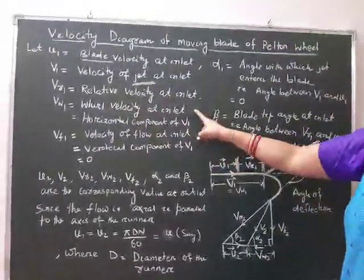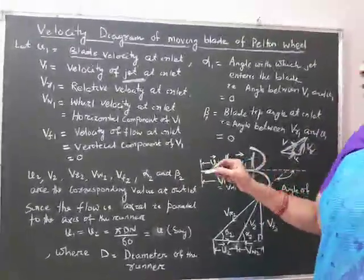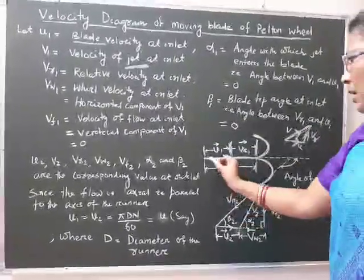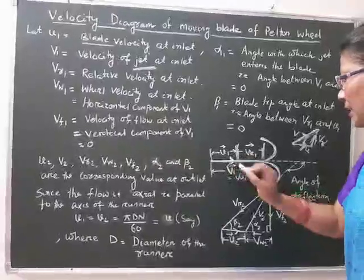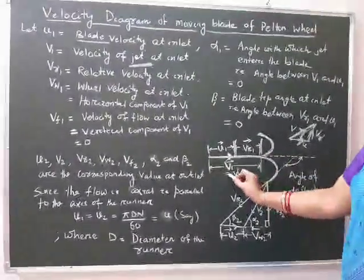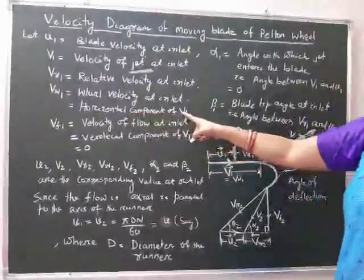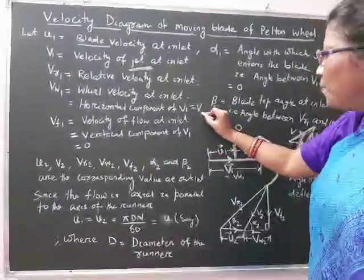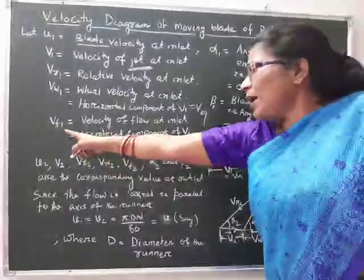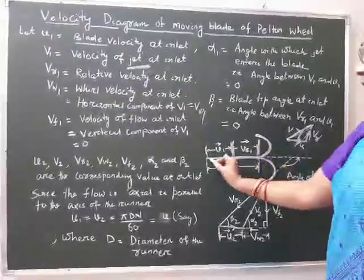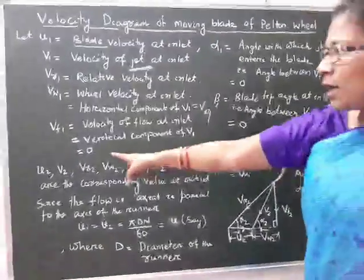Vw1 is the wheel velocity at inlet, which is the horizontal component of V1. This component is required to find out the work done in the case of an impulse turbine. Here, as V1 is already in the horizontal direction, Vw1 is equal to V1. Vf1 is the velocity of flow at inlet, that is the vertical component of V1. So here Vw1 equals V1, and since V1 makes an angle of 0°, Vf1 equals 0.